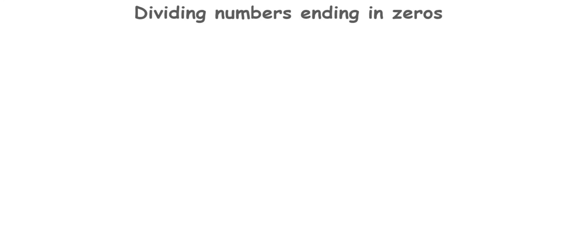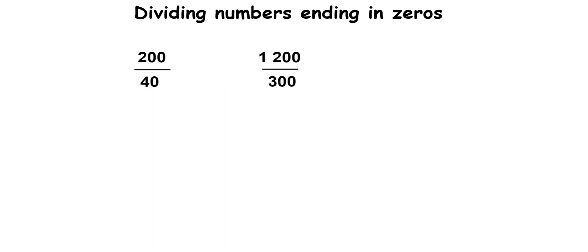In this video, I'd like to show you how to divide numbers ending in zeros. That means problems like 200 divided by 40, or problems like 1,200 divided by 300, and also division problems like 27,000 divided by 9,000.